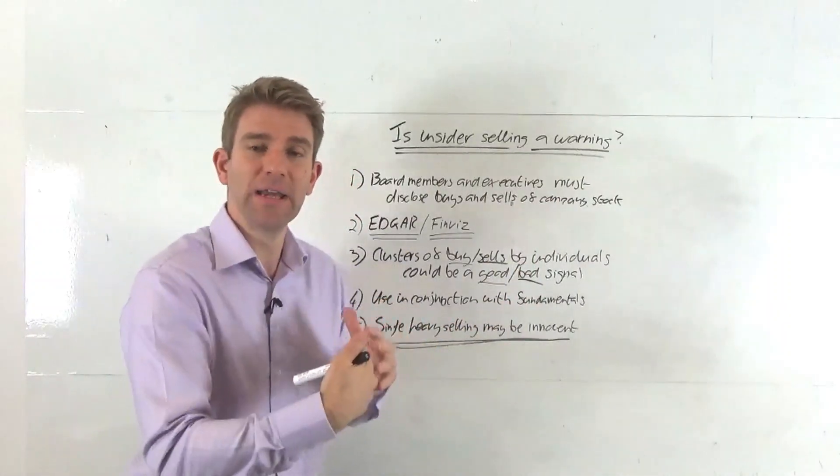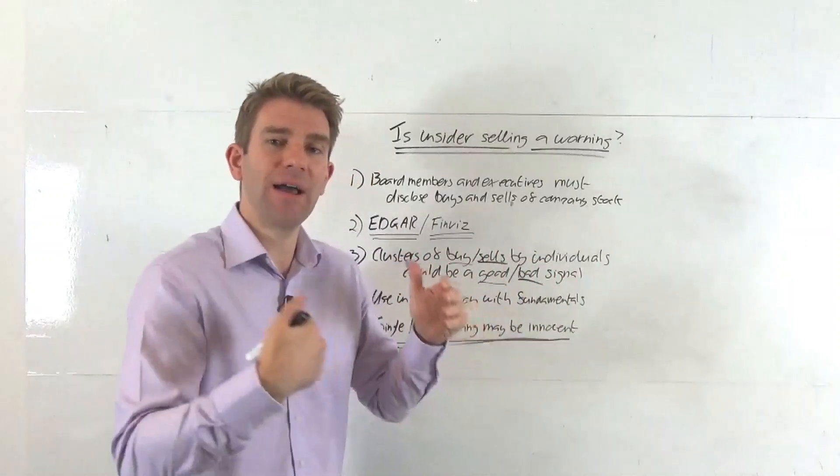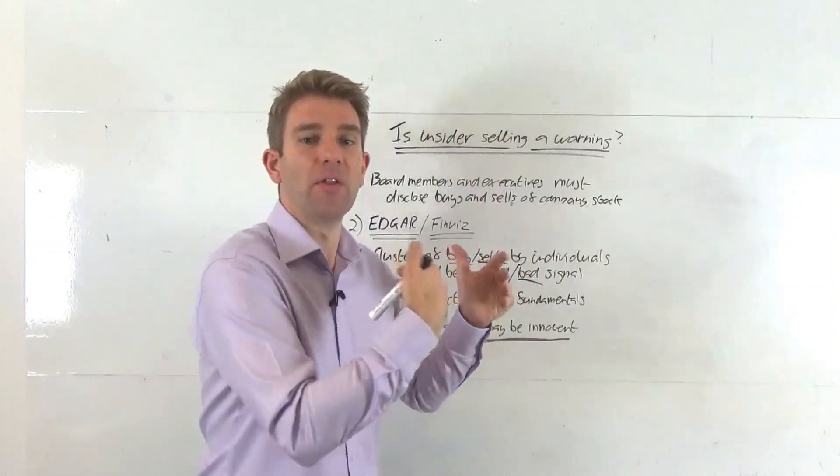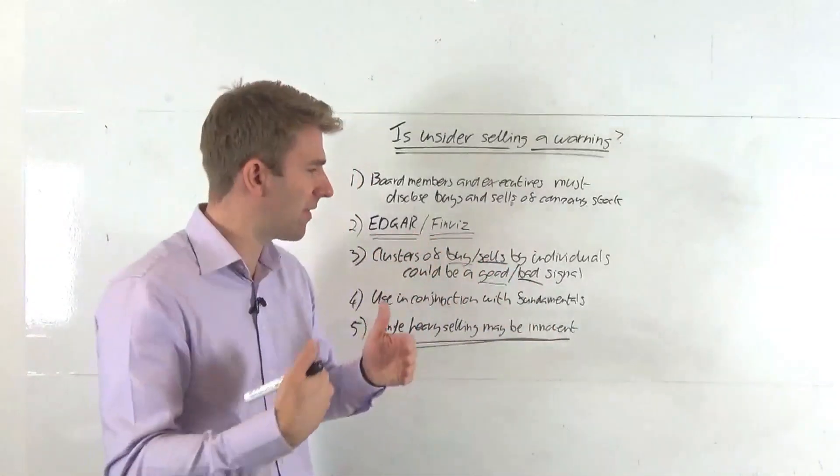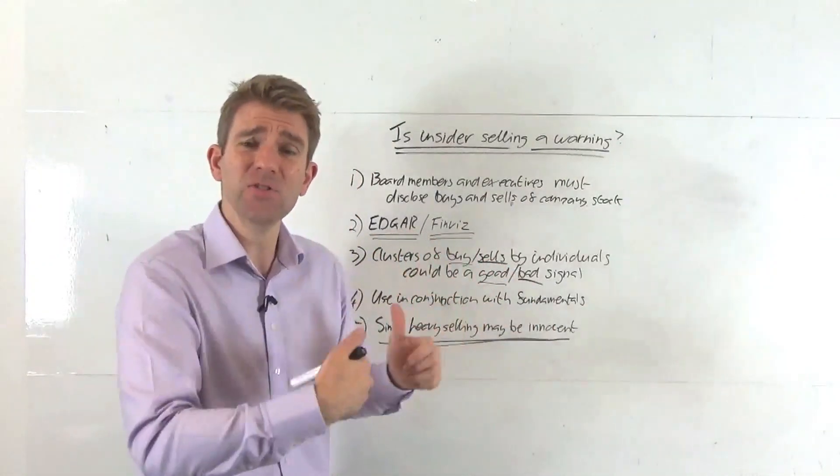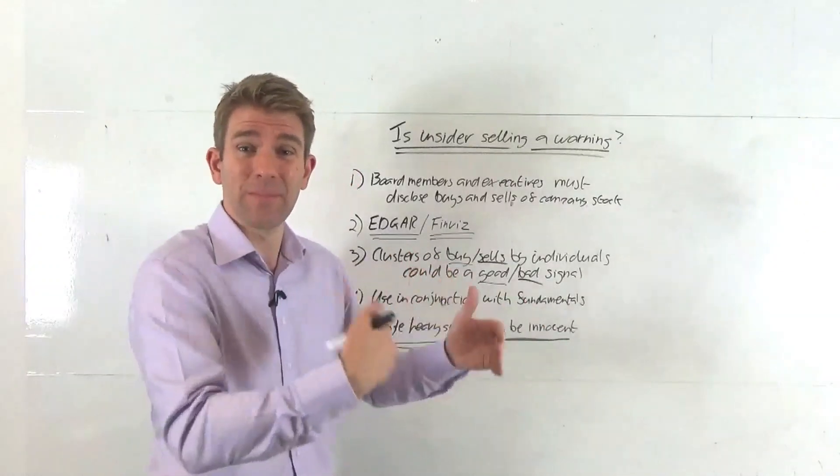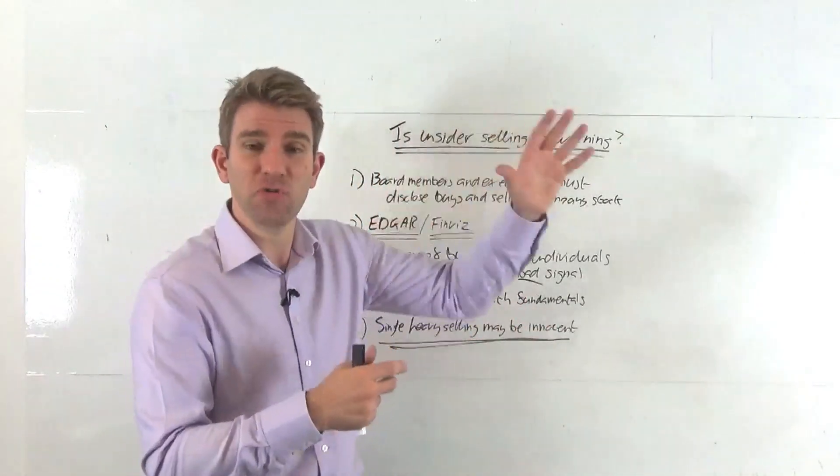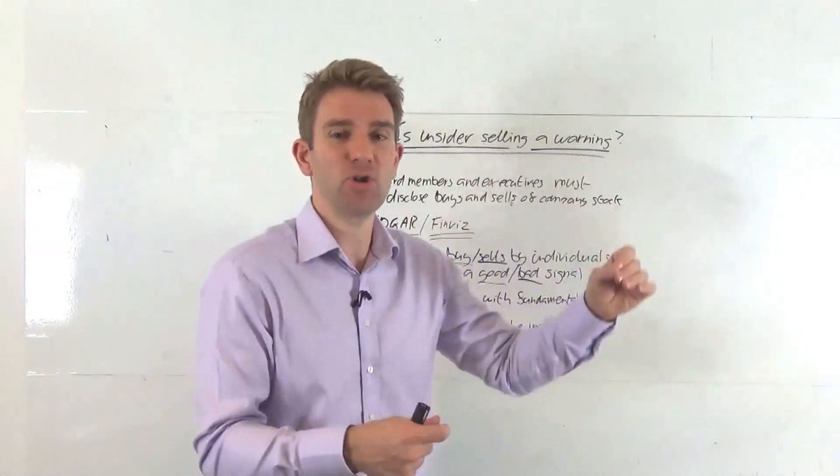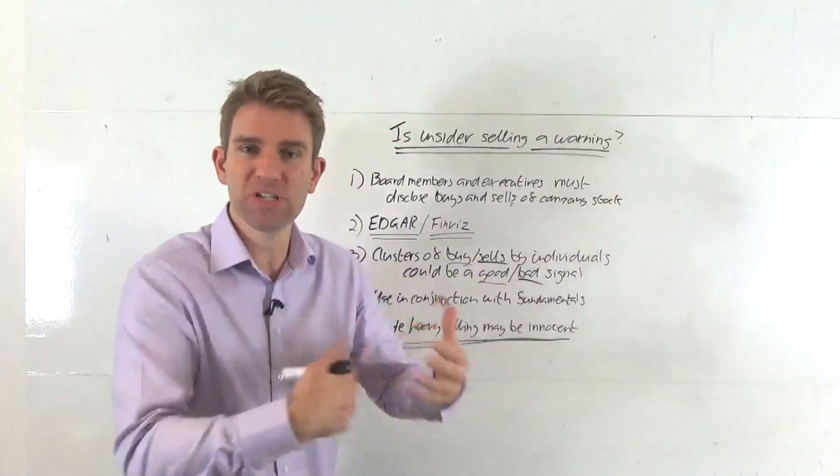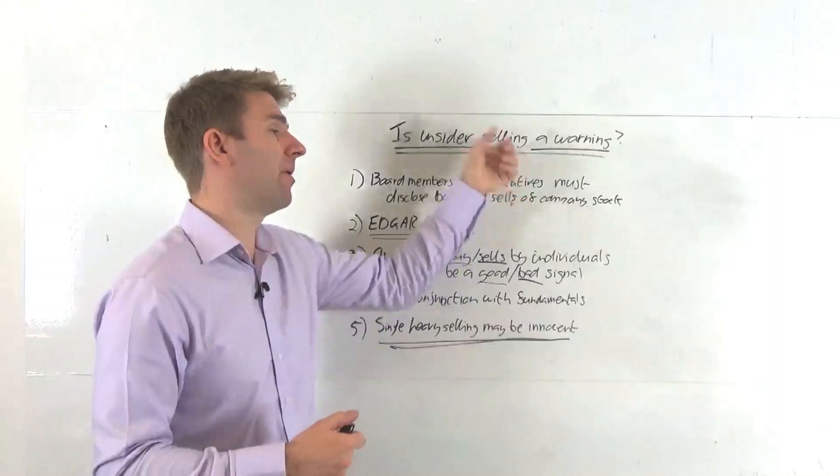So I think the key is: it's not a warning as such on its own. One or two directors is fine - look for the clusters, and look for where the clusters are in relation to the fundamentals. Look at the earnings, how much debt they've got, all the other things you look at, and the technicals as well. What's the price doing? Has it been battered down? Are we seeing buyers or sellers? Those extremes are causing directors to do something - how does that match up with the extreme? Put it all together and make a decision from that. So that's insider selling and buying.